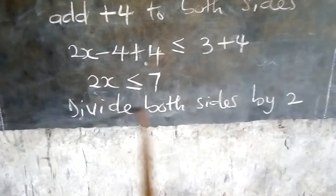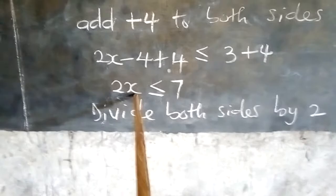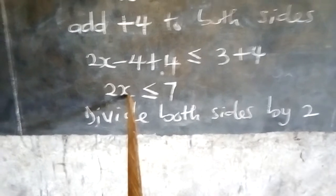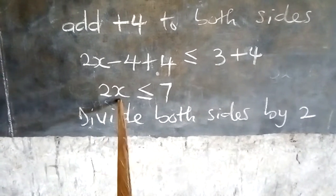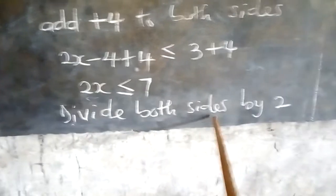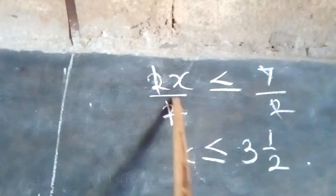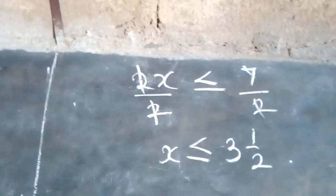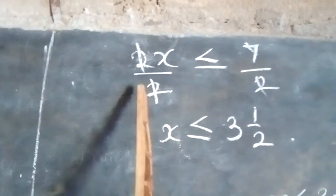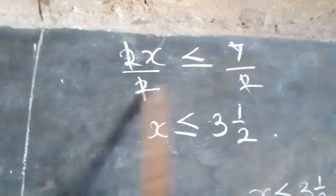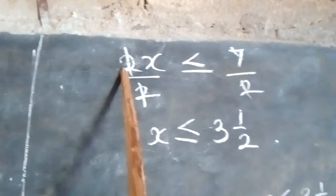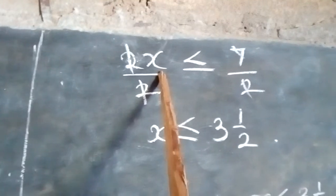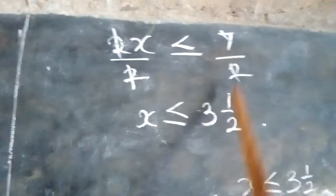The next step is to divide both sides by 2. We want to get the value for x, and since we have 2x, we divide both sides by 2 to remove the 2 and leave x alone. So we divide 2x by 2 and 7 by 2, giving us 3 and a half.